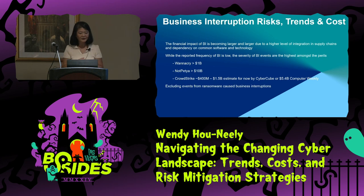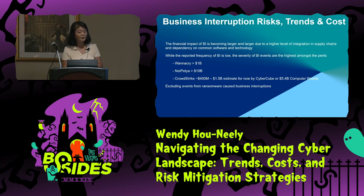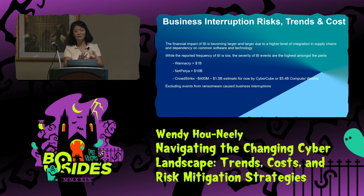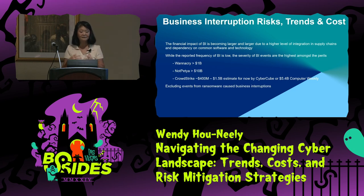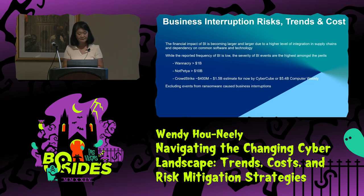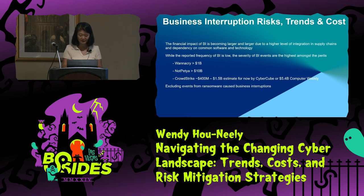Business interruption — you don't hear about it until you really hear about it. This is what put cyber insurance on the map. Before 2017, nobody cared about cyber insurance. Then WannaCry hit, then NotPetya hit, and that's when people said we need cyber insurance. Companies don't always have to disclose interruptions unless it's really big — so it's either all or nothing. The latest is the CrowdStrike event due to a software bug. Current estimates are $1.5 to $5.4 billion, though $5.4 seems high. This excludes ransomware — this is general business interruption.